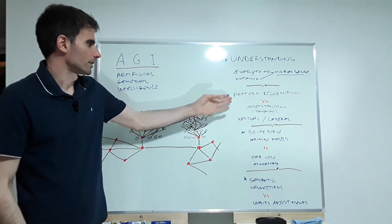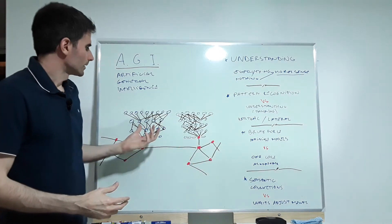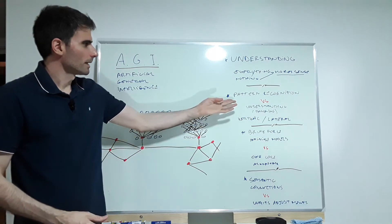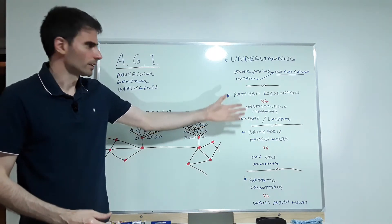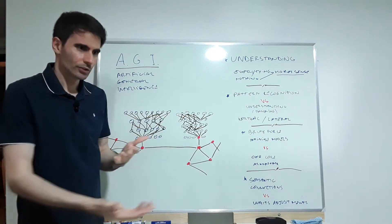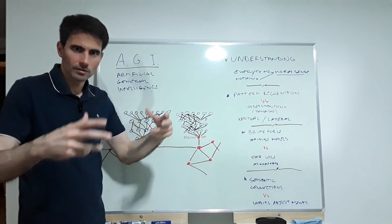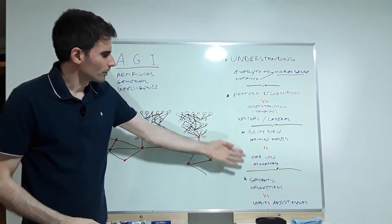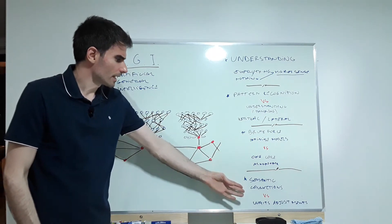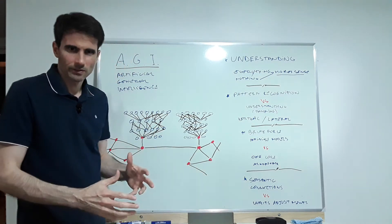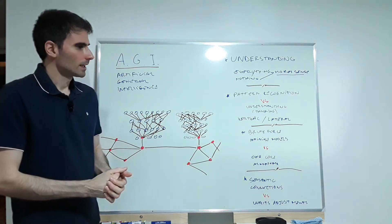The topic is understanding versus pattern recognition. As I see it, neural networks work mainly with pattern recognition. I'd like to focus on the distinction between pattern recognition and actual understanding and thinking. I'm also going to talk about brute force and infinite models versus one core algorithm, and semantic connections versus weight adjustments.